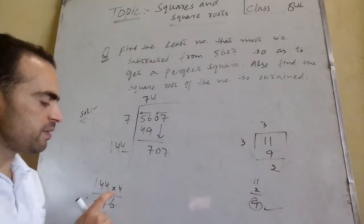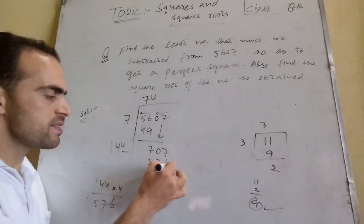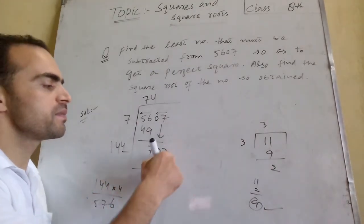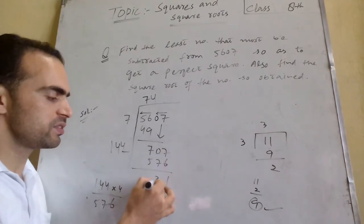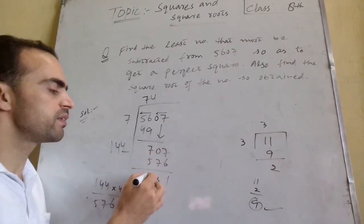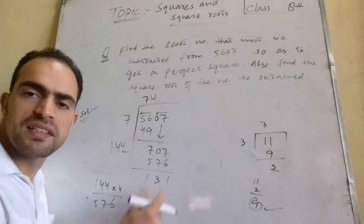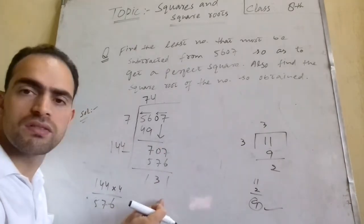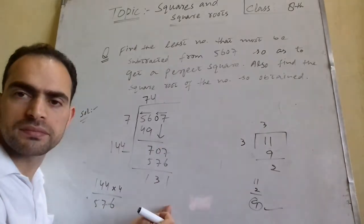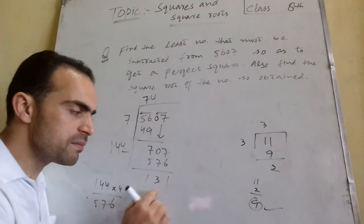Carrying out the subtraction: 576 subtracted from the current dividend gives a remainder. After completing all the steps, the remainder works out to 131.